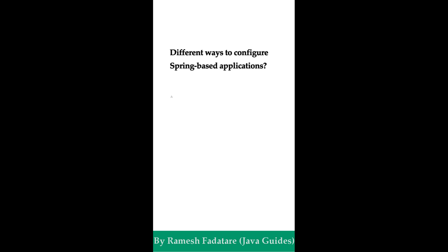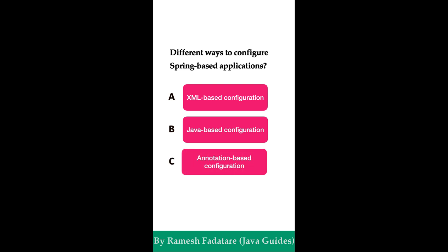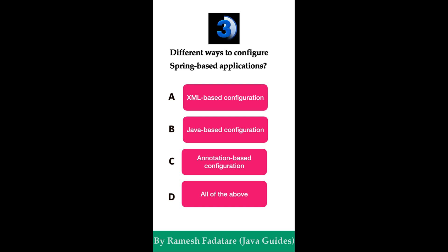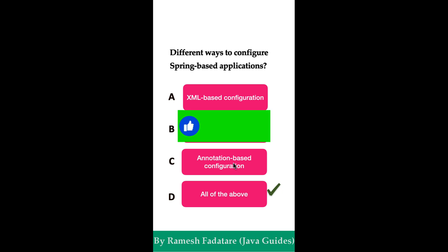What are the different ways to configure Spring-based applications? Option A: XML-based configuration. Option B: Java-based configuration. Option C: annotation-based configuration. Option D: all of the above. The correct answer is option D, all of the above. Spring-based applications can be configured using three primary methods: XML-based configuration, Java-based configuration using @Configuration and @Bean annotations, and annotation-based configuration using annotations like @Component, @Service, and @Autowired to automatically detect and wire beans.